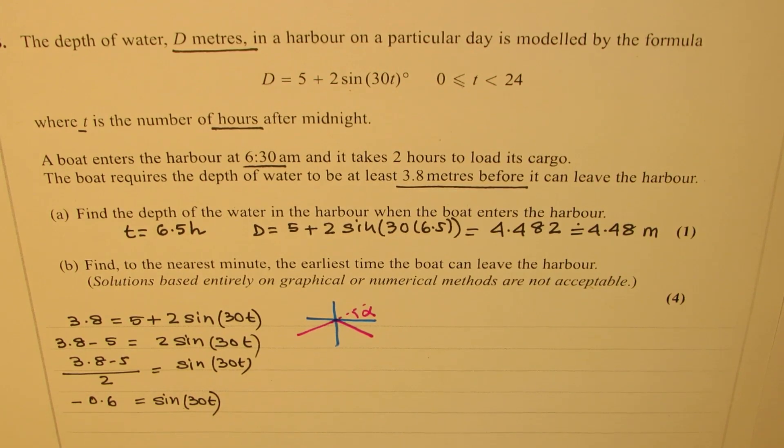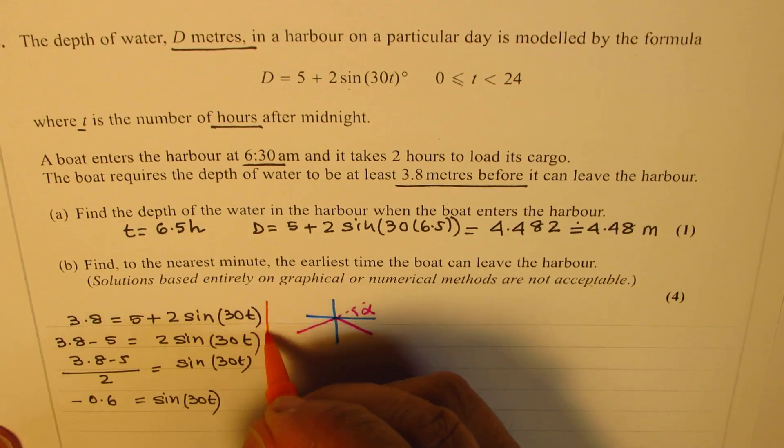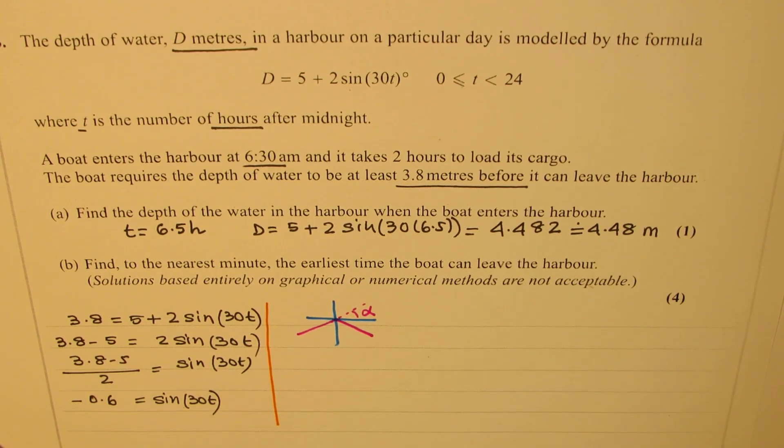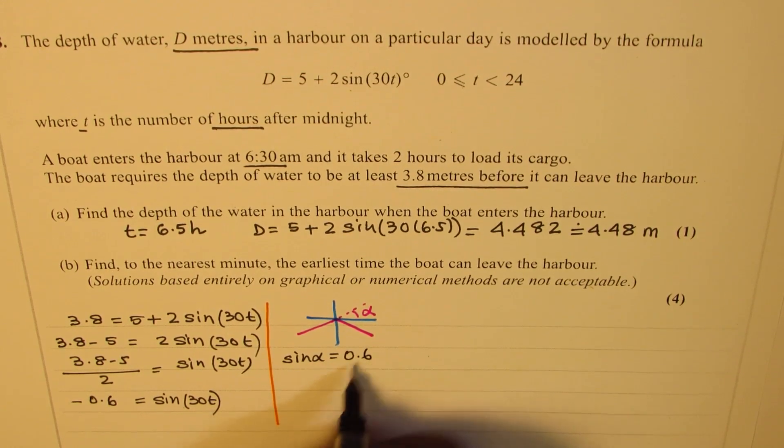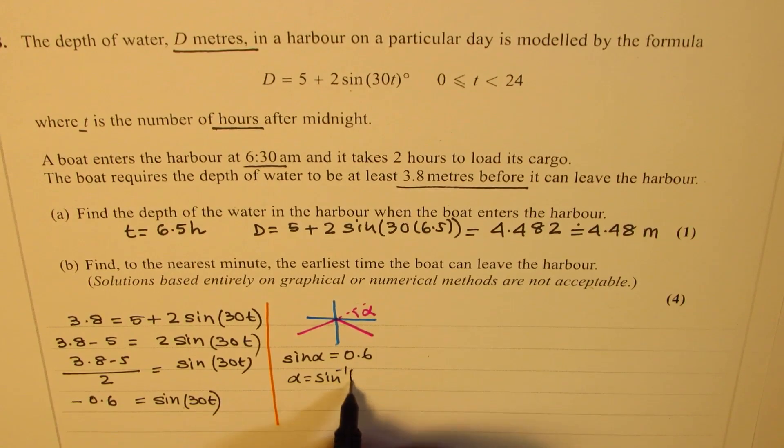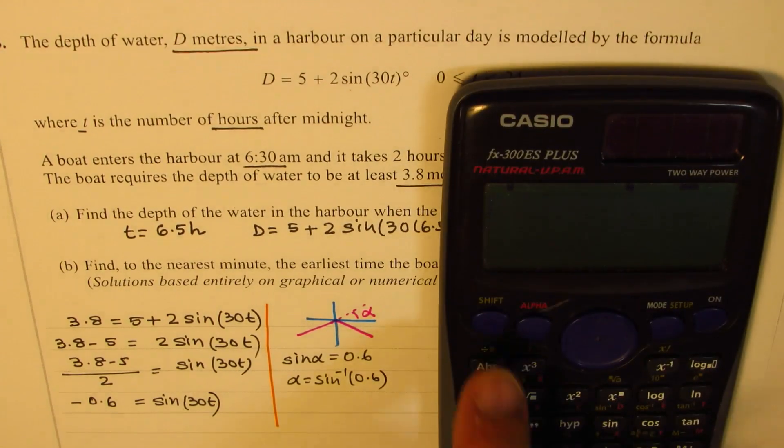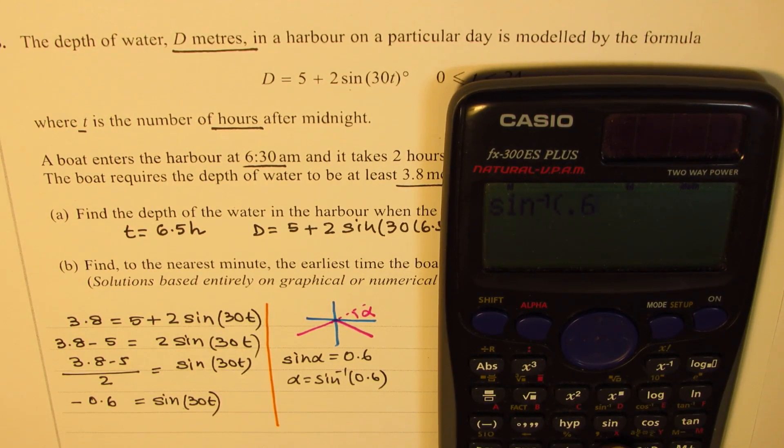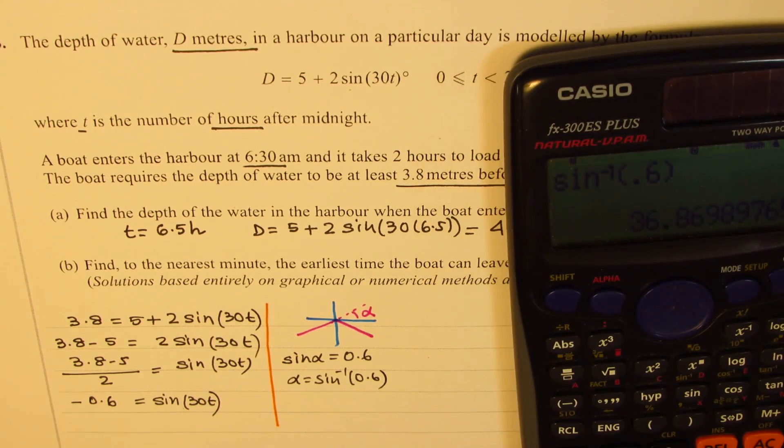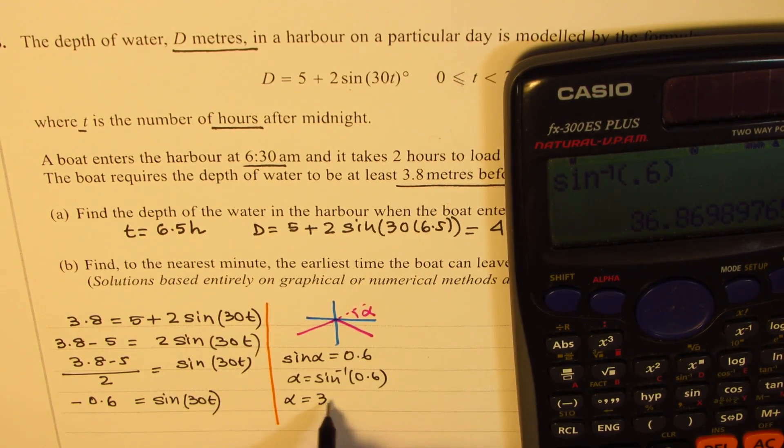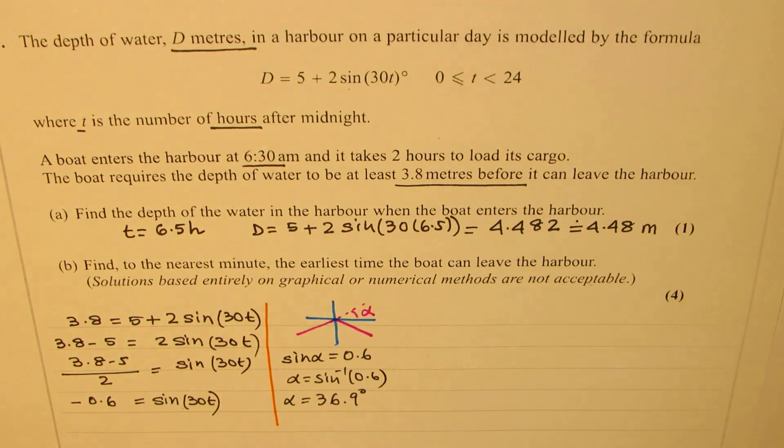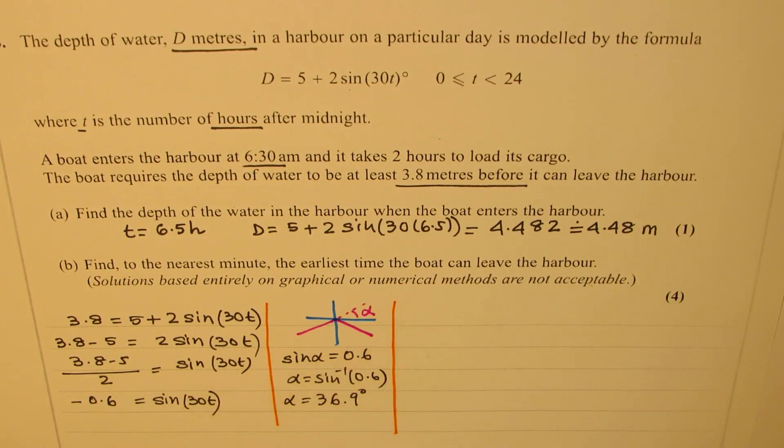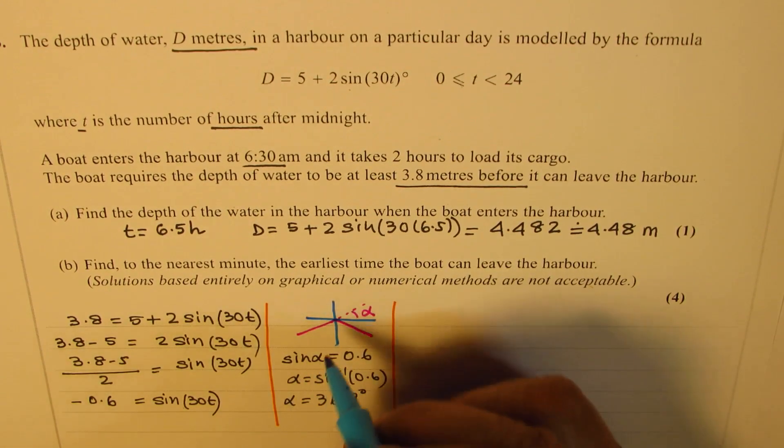I'm using very little space here so that you could see everything at one place. So we are saying sine alpha equals 0.6, alpha equals sine inverse of 0.6. Shift sine inverse 0.6 equals, we get this alpha as 36.869. So we'll round it to 9. So that is alpha for us. All answers to three significant places.